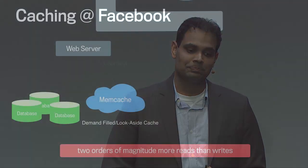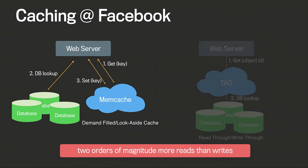Caching at Facebook takes two different forms. One is a demand-fill look-aside cache served by Memcache — we first try to get a key from Memcache; if it's there, we're done; if not, we go to the database, look it up, and then set the value in Memcache for later. A second model is a read-through write-through cache used by the TAO system, where the web server fetches the object and does the database lookup on behalf of the client. Both systems share one key aspect: they have two orders of magnitude more reads than writes.